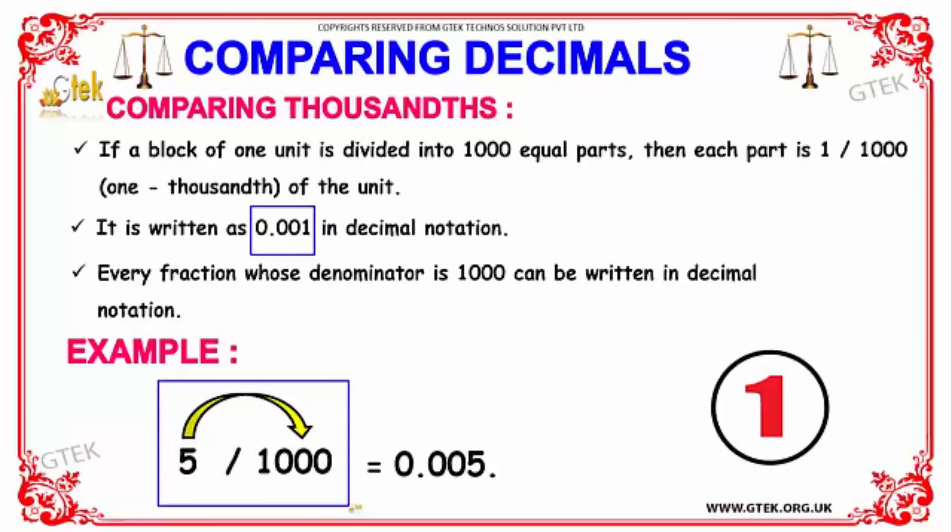For the example here, 5 divided by 1000 is represented as 0.005.